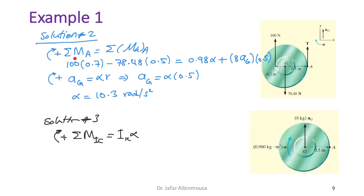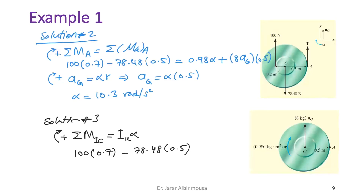We don't know I_IC directly, but we know I_G = 0.98. We apply the parallel axis theorem to find I_IC.